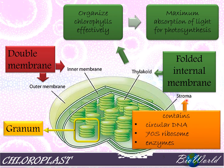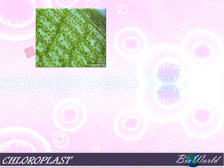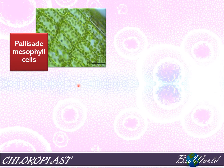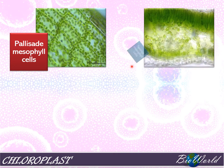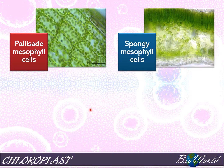In the stroma, you will find the circular DNA, the 70S ribosome, as well as the enzymes necessary for photosynthesis. Although we say chloroplast is found in plant cells, not all plant cells have chloroplasts. Chloroplasts are only found in the cells of the leaves — this includes the palisade mesophyll cells, the spongy mesophyll cells, as well as the guard cells.